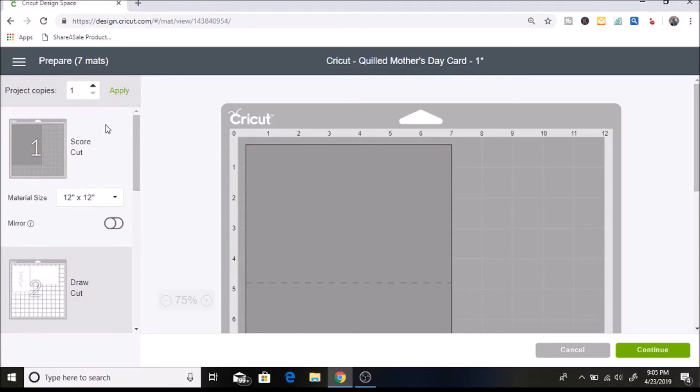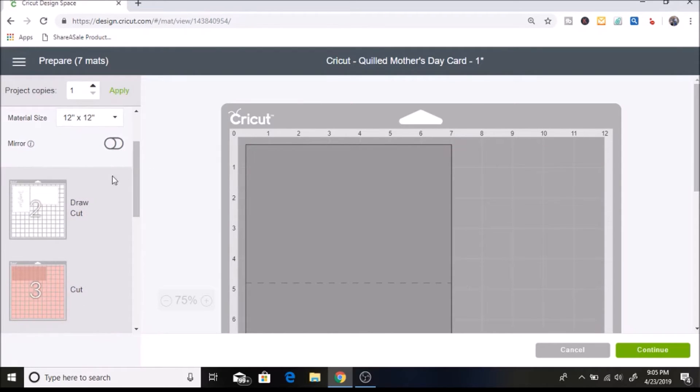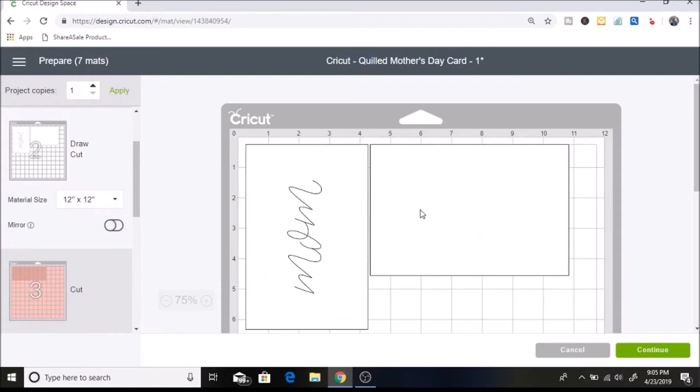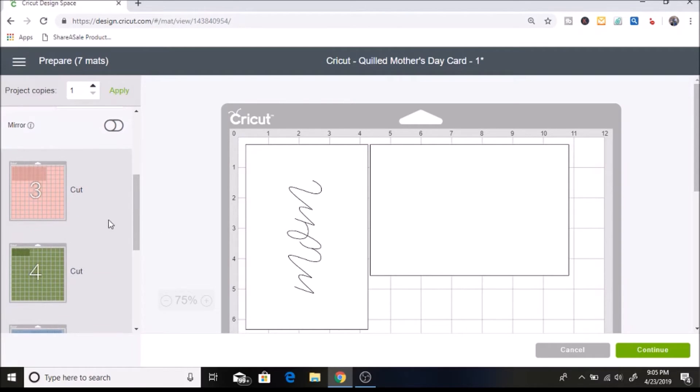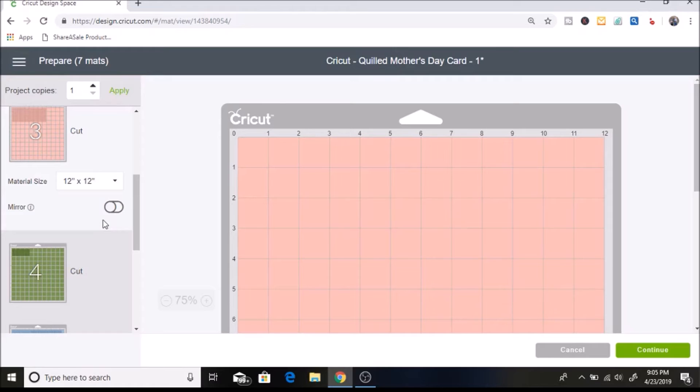So here it separates it on each mat and it'll separate it by colors. So you can see the first one here this one is a score and cut. So the score is going to make a crease on this line here and then it's going to cut out this card. And then the next one it'll prompt me to do this one which is a draw and cut. So I will put my marker in the machine and it'll draw and cut it out at the same time.